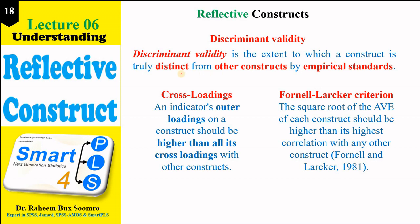Discriminant validity is the extent to which a construct is truly distinct from other constructs in empirical terms. When one construct is truly different from another construct, discriminant validity has been established. This means that construct A is measuring a different concept from construct B. Just as we find a difference between two items, the same concept applies here: when constructs are truly different from each other, discriminant validity is confirmed.